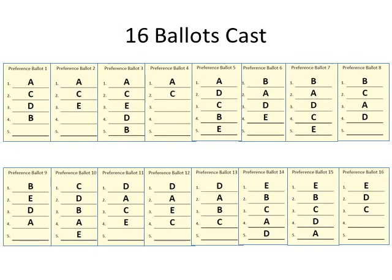Pretend that these 16 ballots are the ballots that were cast. You can see that the first preference on ballots 1 through 5 is candidate A. The first preference on ballots 6 through 9 is candidate B. The first preference on ballot 10 is candidate C. The first preference on ballots 11 through 13 is candidate D. And the first preference on ballots 14 through 16 is candidate E.